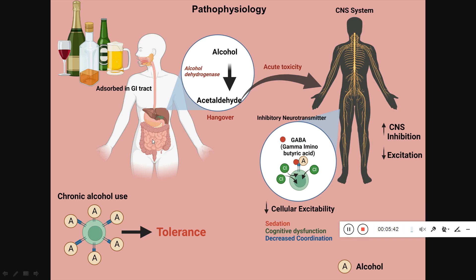Coming to the pathophysiology — what exactly happens: once you drink alcohol, it gets absorbed in your GI tract. In the body, alcohol is broken down into acetaldehyde by alcohol dehydrogenase. This leads to acute toxicity to the central nervous system, resulting in increased inhibition of the CNS and decreased excitability, which makes the person feel calm.